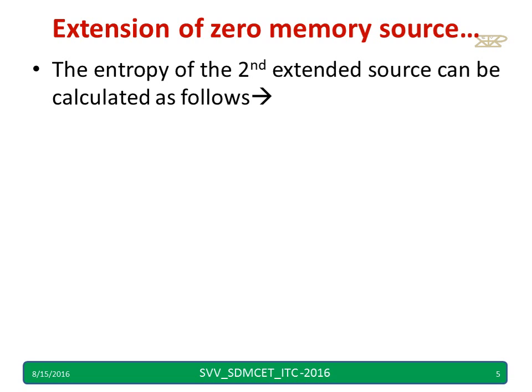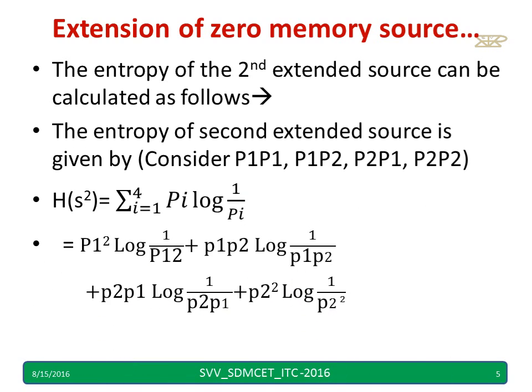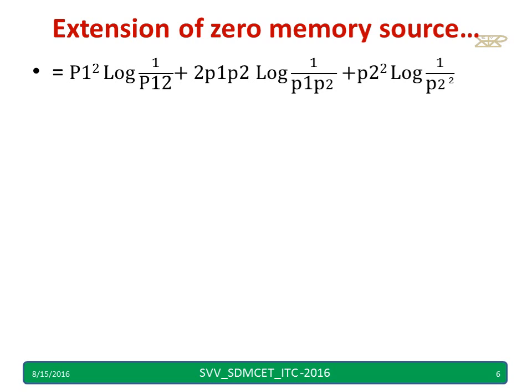The entropy of the second extension can be calculated as follows. The second extension has probabilities p1·p1, p1·p2, p2·p1, and p2·p2. We write the entropy equation H(S²), where the superscript square denotes the second extension, using these four probabilities.